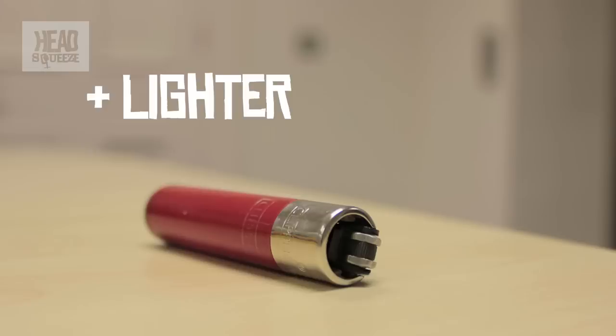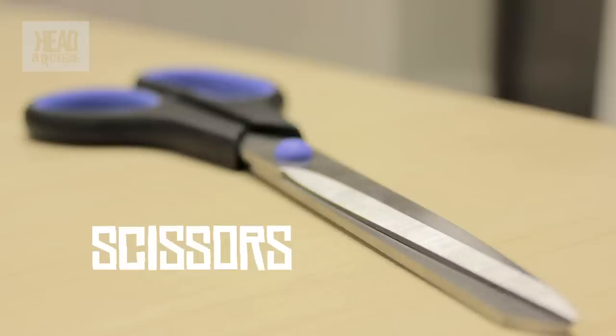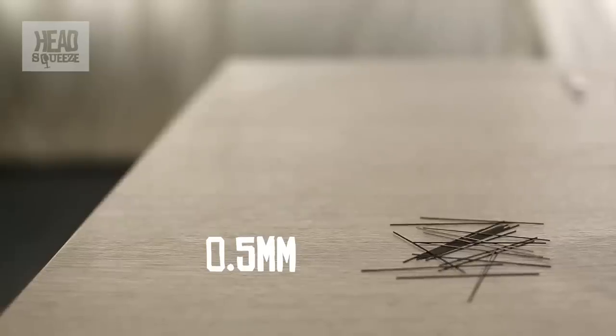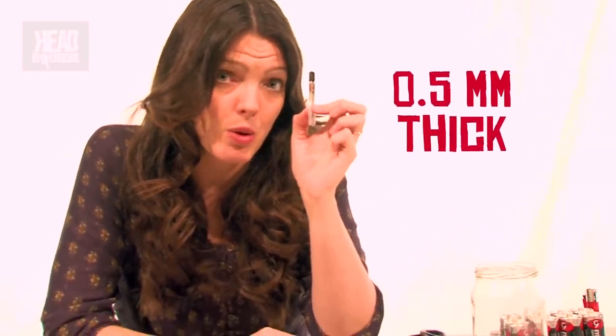a lighter, some electrical tape, some scissors, and some pencil lead. Because this is what we're going to be using as the filament for our light bulb. And make sure it's half a millimeter pencil lead. That's what works best.